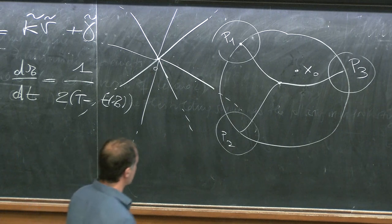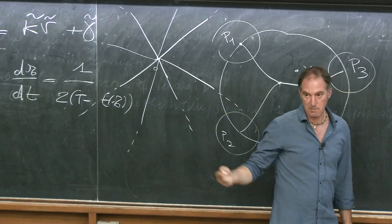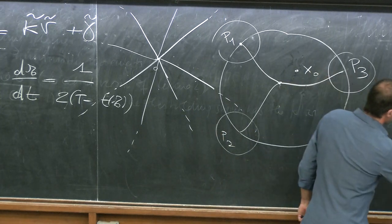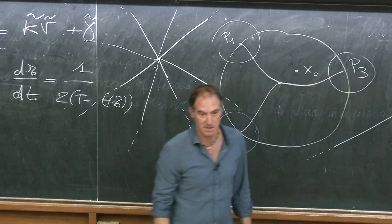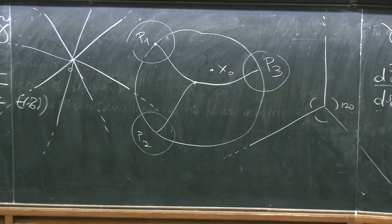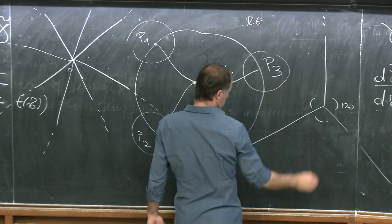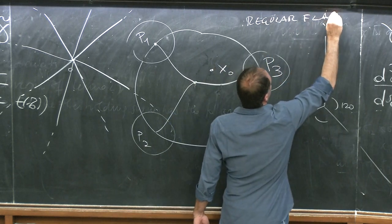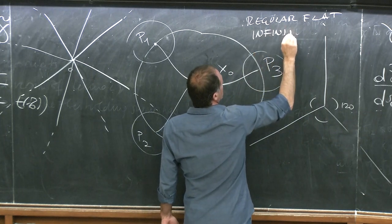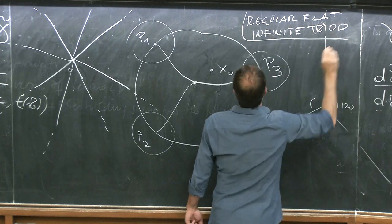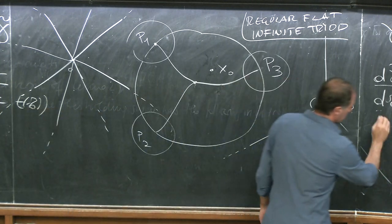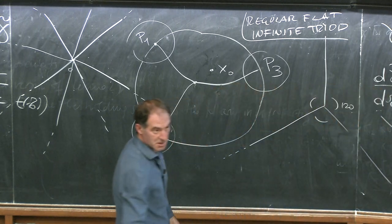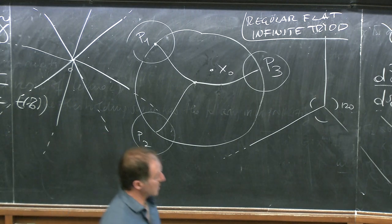A regular shrinker means the same as regular network: only triple junctions with 120-degree angles. For instance, four lines crossing at right angles form a shrinker: k=0 and the position vector is perpendicular to the normal. More generally, any finite collection of infinite half-lines from the origin is a shrinker. There is only one regular shrinker with a single triple junction — the flat infinite regular triode, with three half-lines at 120 degrees.